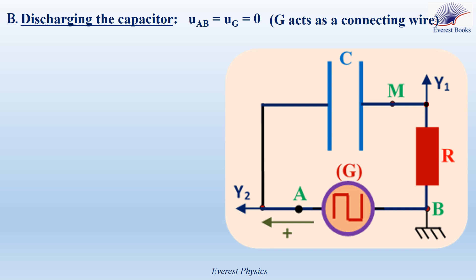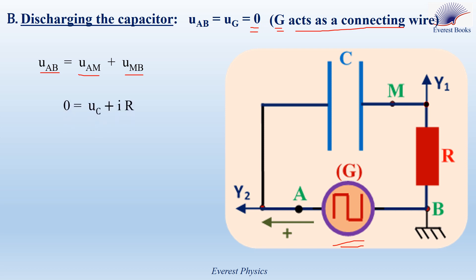Let's determine the expression of the discharge current. During the discharging phase, the voltage provided by the function generator is zero, so the generator acts as a connecting wire. Applying Kirchhoff's voltage law: U_AB equals U_AM plus U_MB, giving 0 equals U_C plus i times R. Rearranging: i equals minus U_C over R. Since R is constant and U_C is variable during the discharging phase, the discharge current is variable.